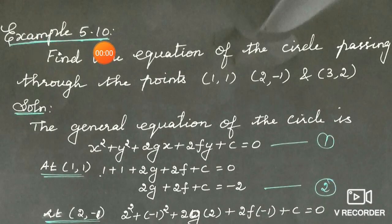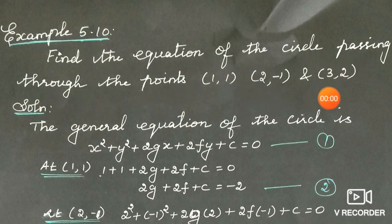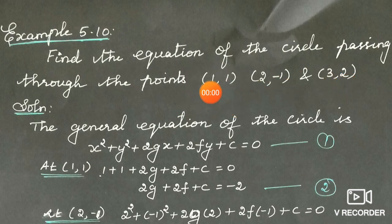Example 5.10 in unit 5. Find the equation of the circle passing through the points (1,1), (2,-1), and (3,2). We need to find the equation of the circle — the circle that passes through these 3 points.